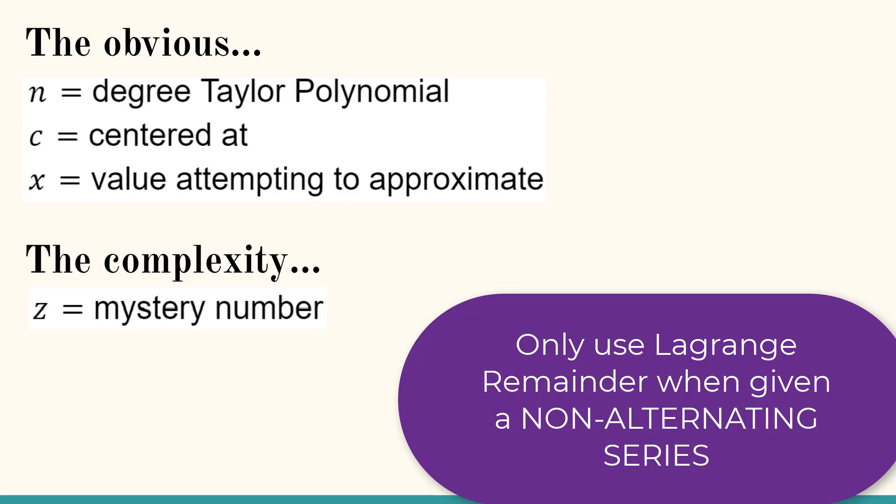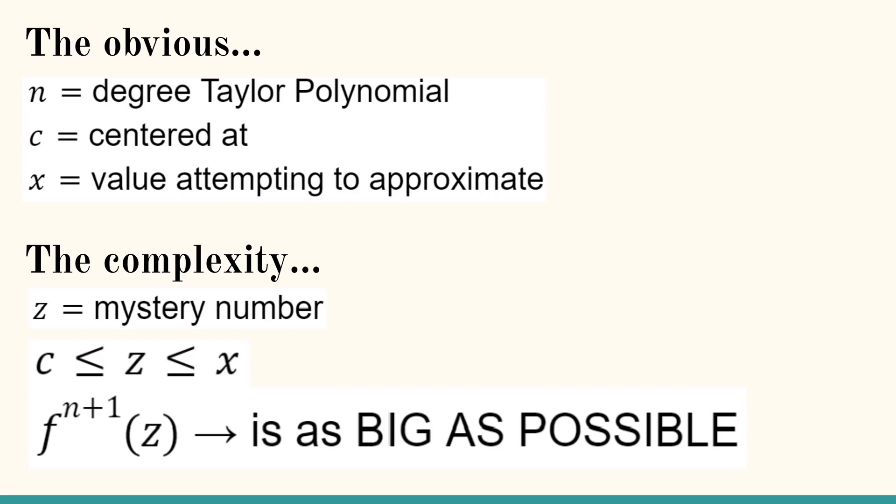The complexity, z. What is that? Z is a mystery number. We do have an interval for z, and we know that when we plug in z to the n plus 1st derivative of f of z, we need that to be the biggest y value possible.